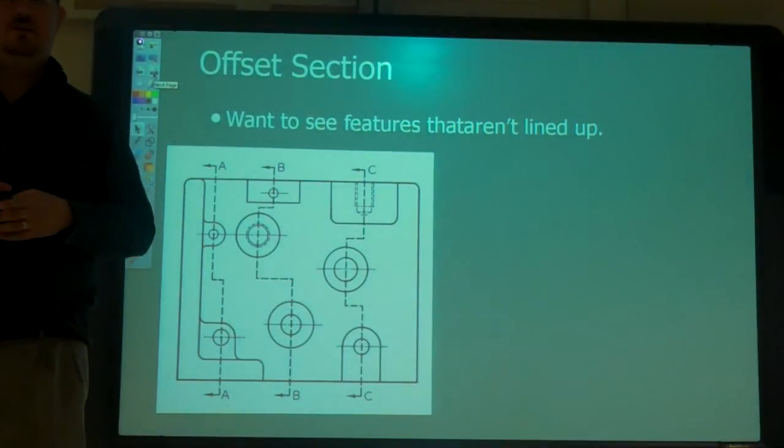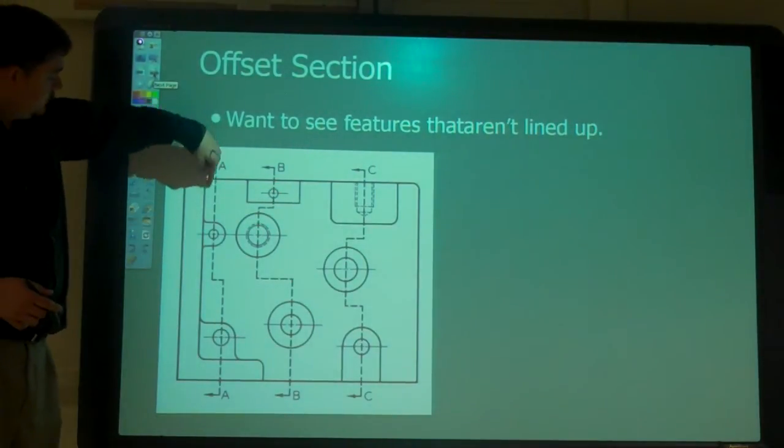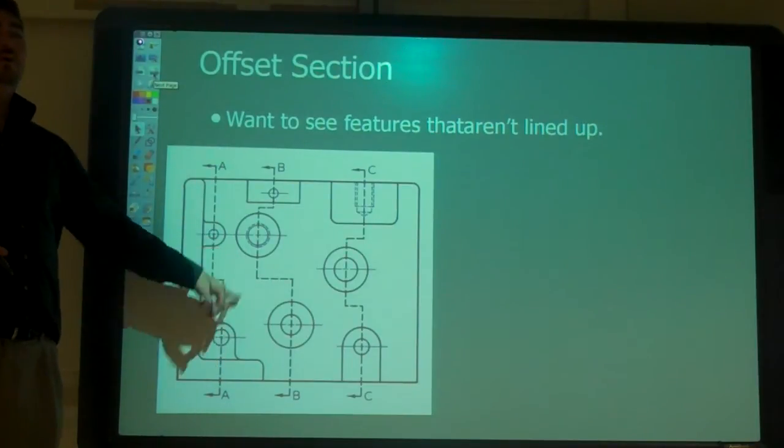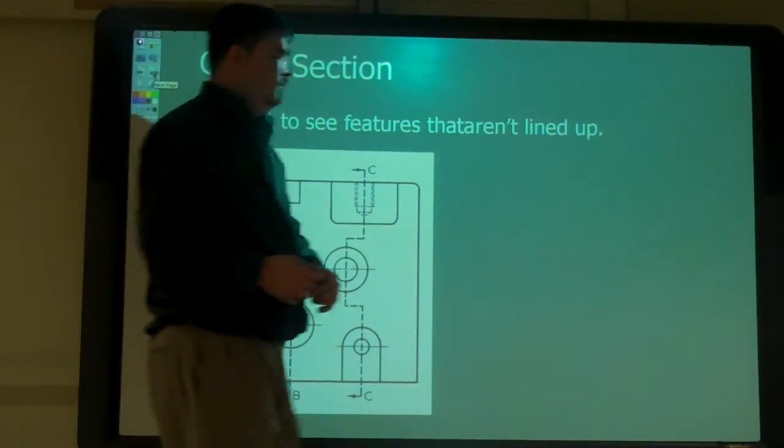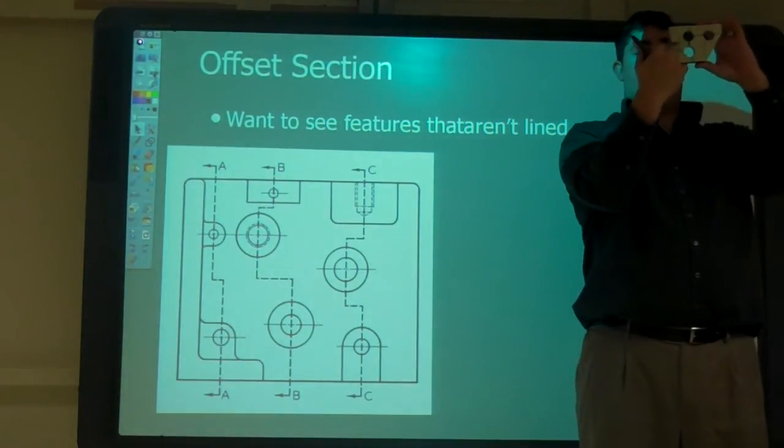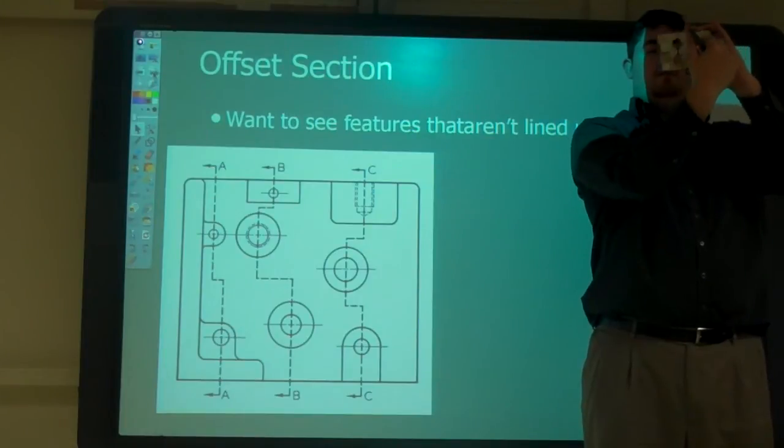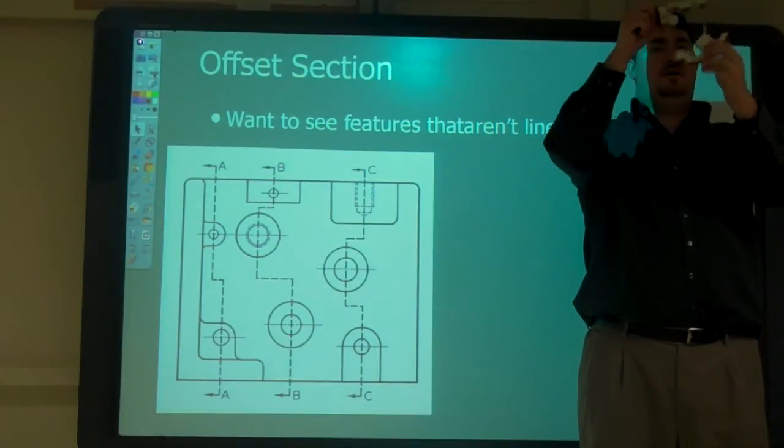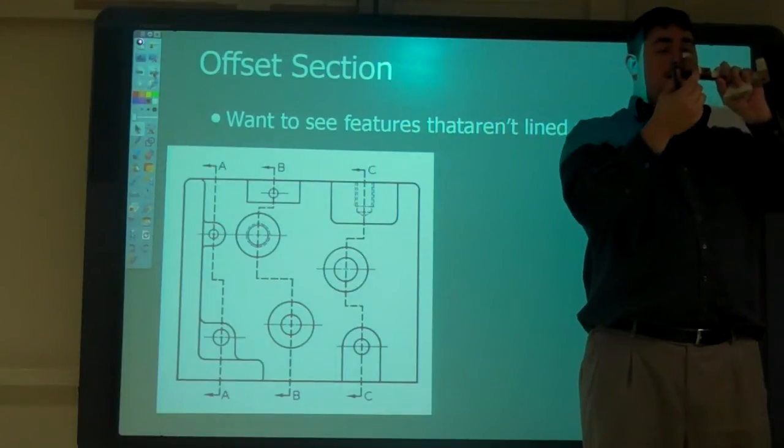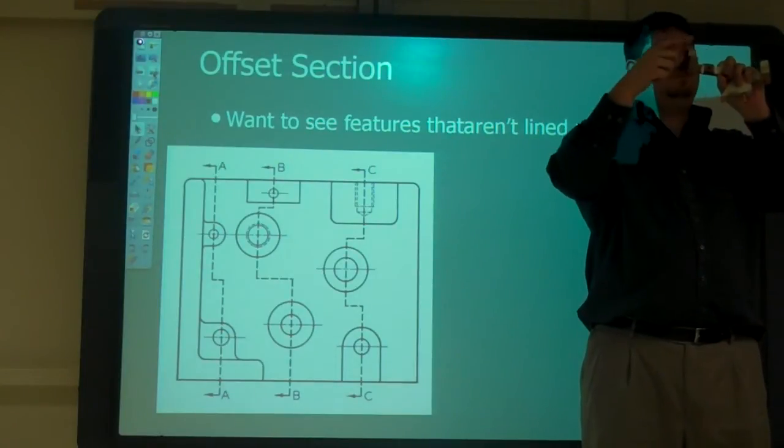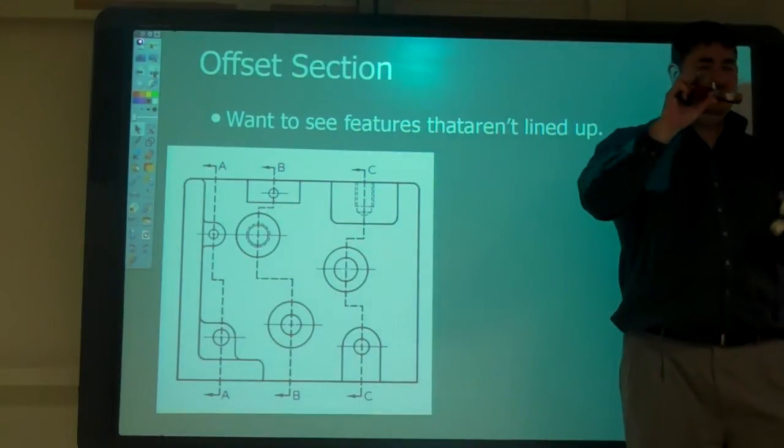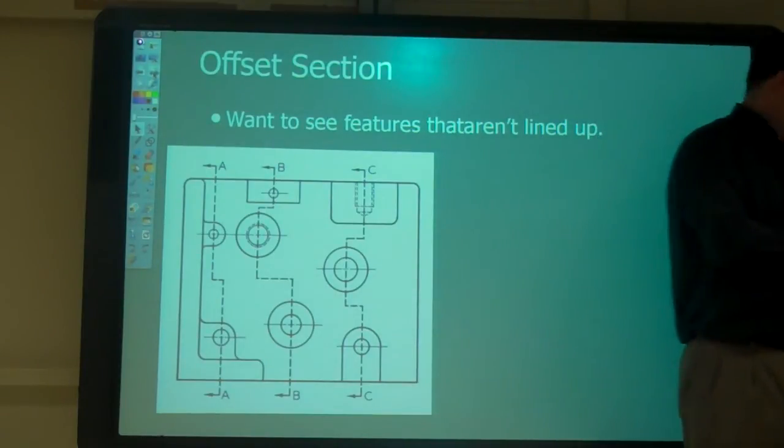So an offset section would be like a full section that would cut straight, but here we have two holes that aren't lined up. Or in this example here, I've got three holes. I want to cut through here and then cut through there. So I want to see that section. I want to see there, there and there. I want to see that back there.